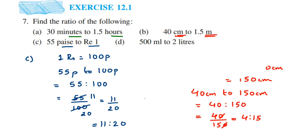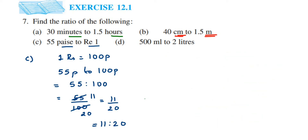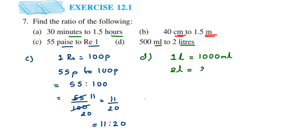The last question: we have milliliters and liters. So 500 milliliters to 2 liters. Everything should be in the same unit, so I am going to convert liters to milliliters. We know that 1 liter is equal to 1000 milliliters. When you convert 2 liters to milliliters, that is a higher unit to a smaller unit, so we multiply: 2 into 1000 milliliters, which will be 2000 milliliters.